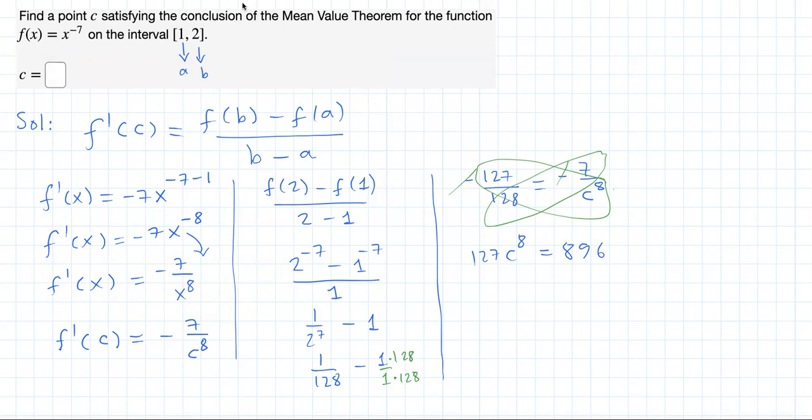Now, dividing both sides of this equation by 127, you're going to get C^8 = 896 / 127.